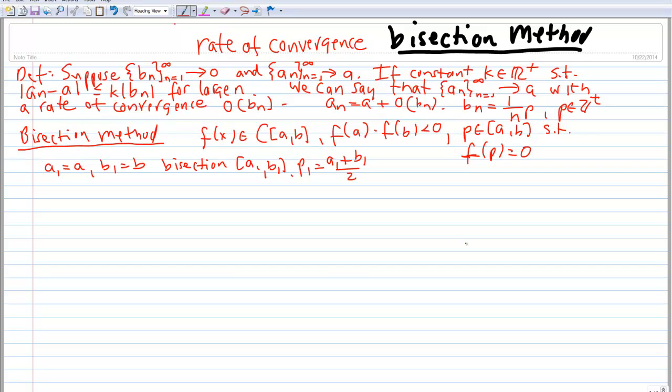Now, P, which is the exact solution, is going to be somewhere on one side of the interval. This is our interval here with A1 and B1. P is somewhere in here, and this is going to be our P1. We know that, at a maximum, the distance between P1 and P is going to be this width right here, which is one-half times B1 minus A1. So this tells me that the absolute value of P1 minus P is less than or equal to one-half times B1 minus A1.